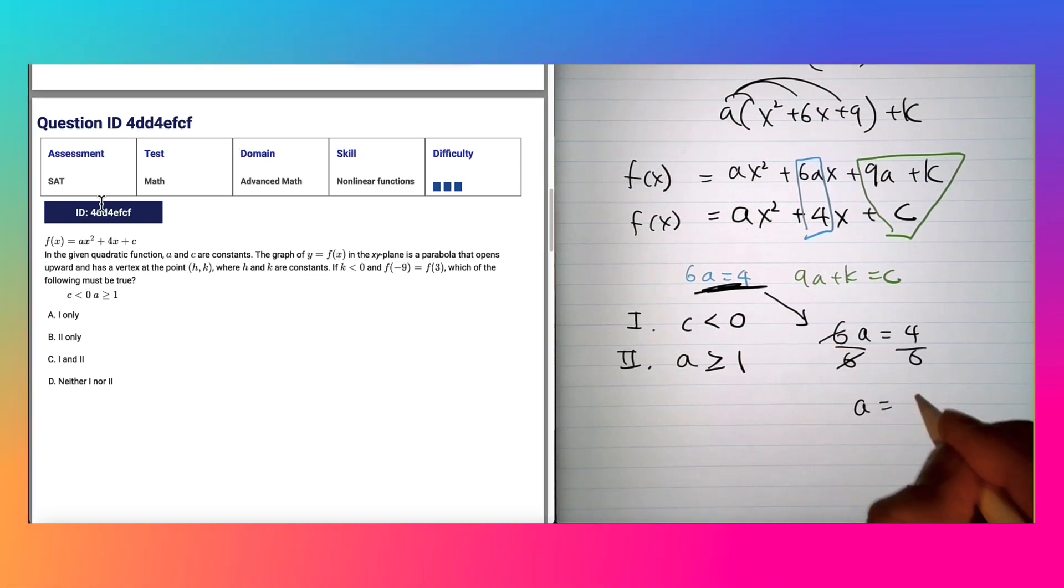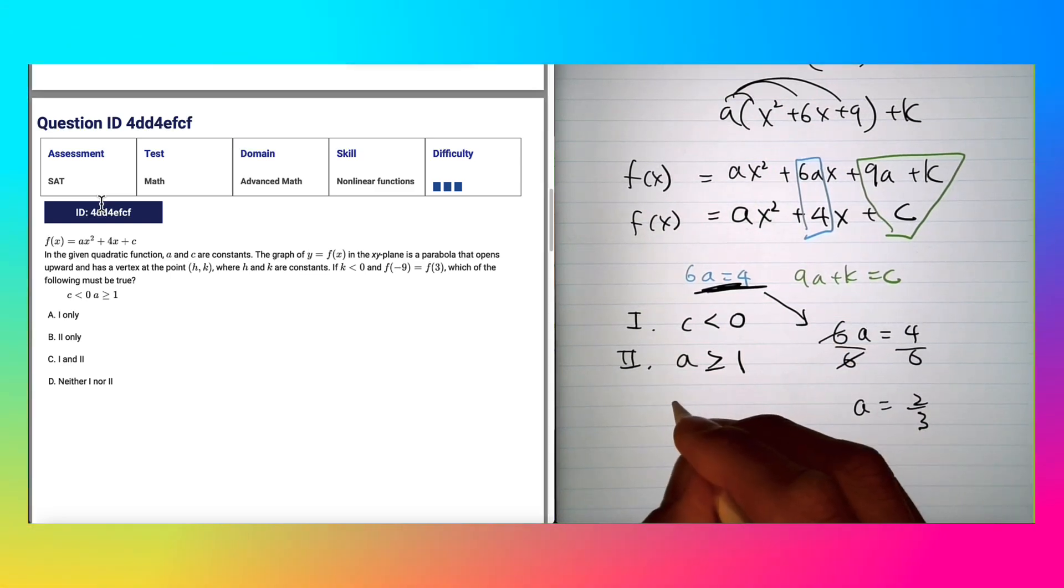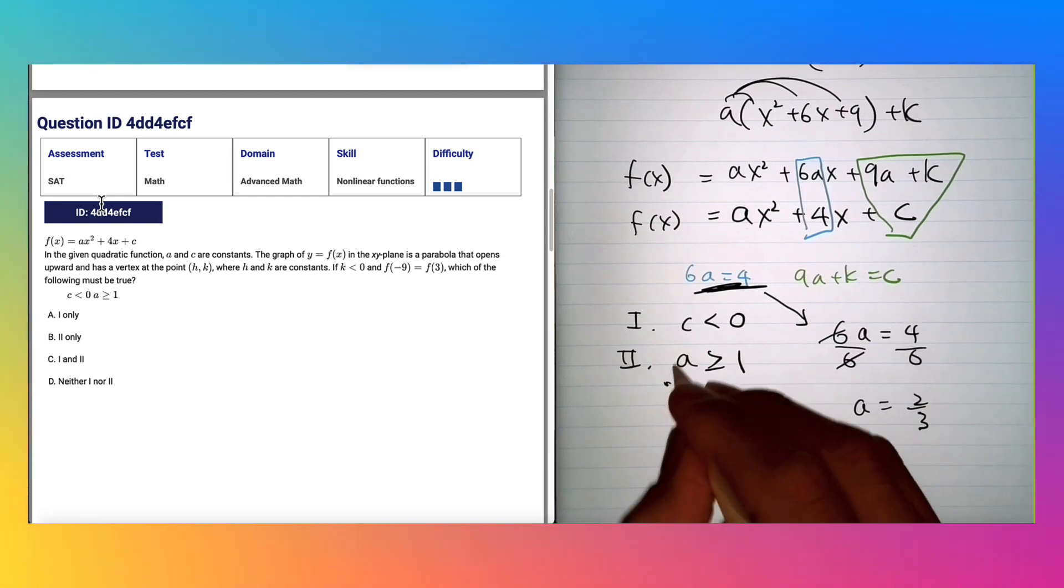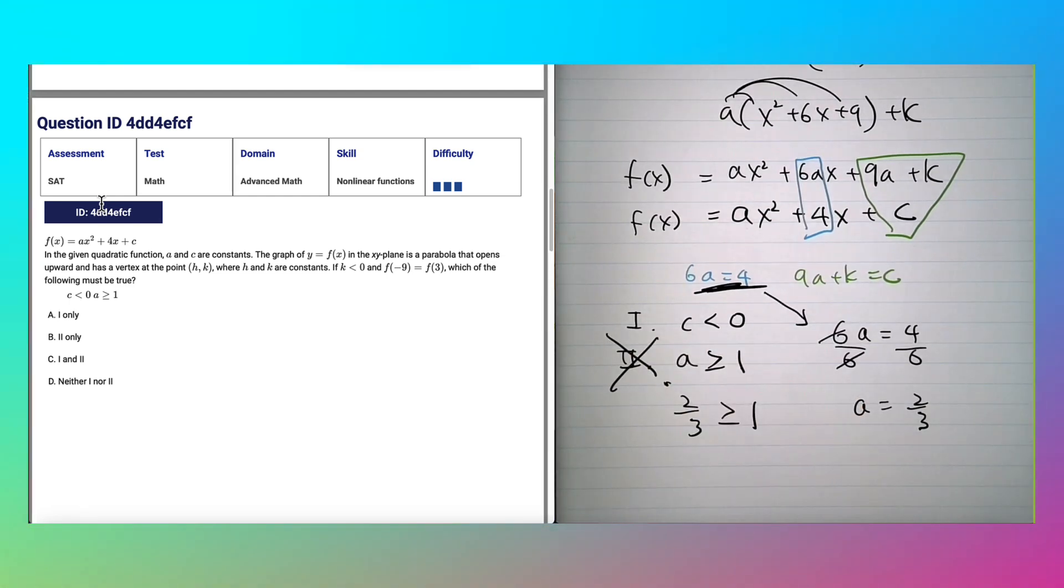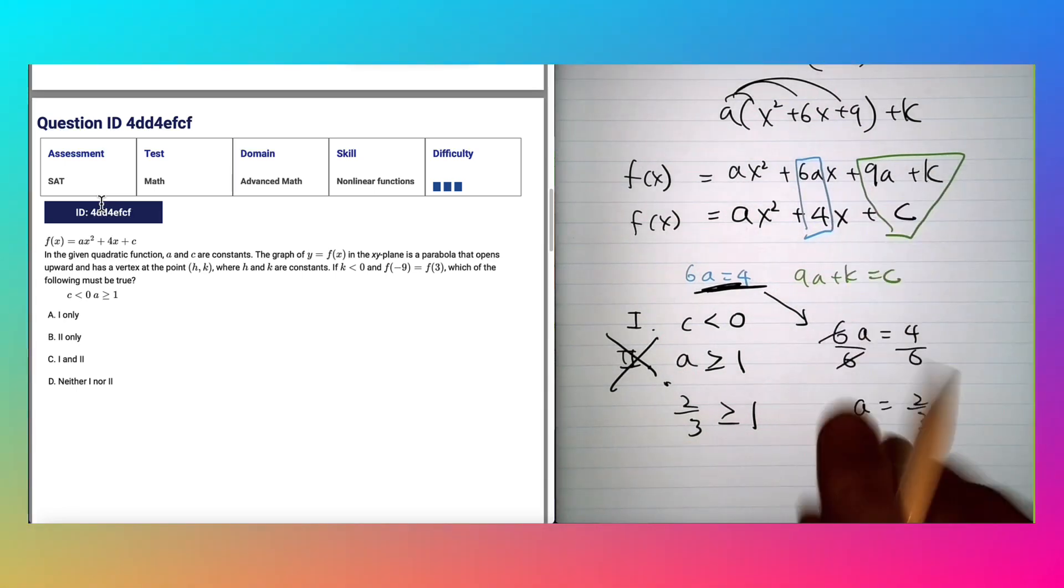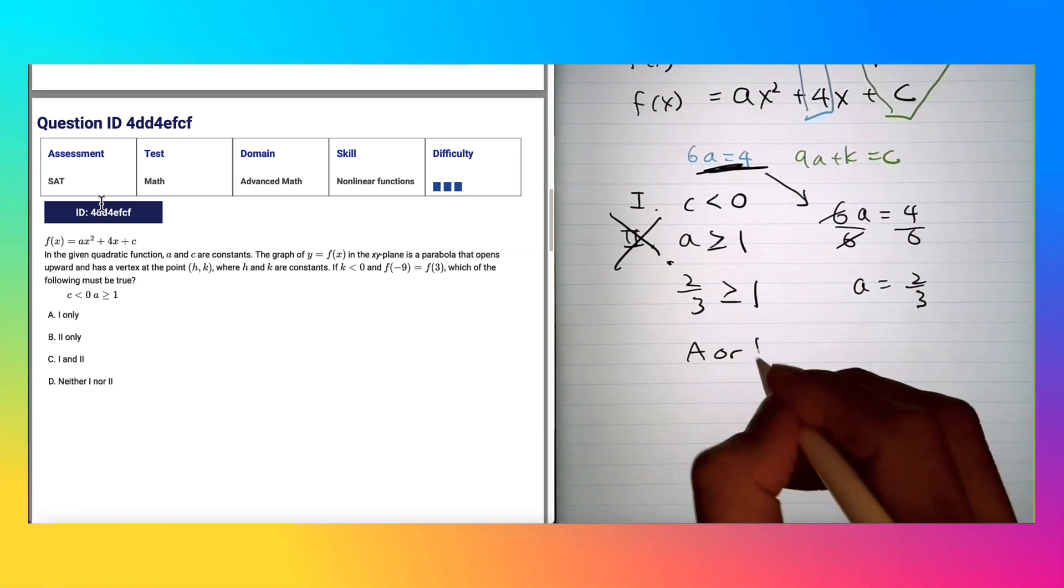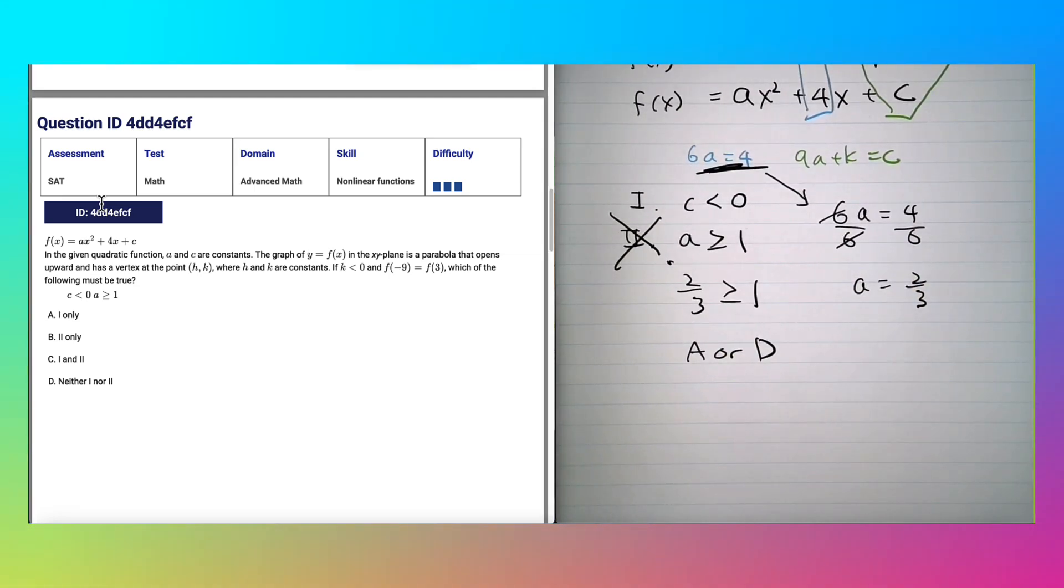And there's absolutely no way 2/3 is greater than or equal to 1. Therefore statement 2 is false, so that means we can eliminate choice C and choice B. So we're left with A or D so far. Now if you're running out of time on the test, just randomly guess if you can narrow down to two choices.